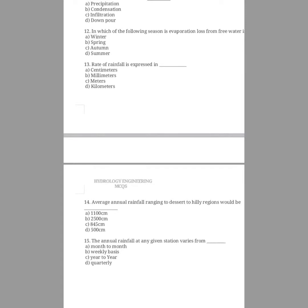Question number fourteen: average annual rainfall ranging from desert to hilly region would be what? The options are 1100 centimeters, 2500 centimeters, 845 centimeters, 500 centimeters. The answer is option A, 1100 centimeters, because rainfall varies widely from one part of the world to another. Ranging from desert regions to hilly regions, the average annual rainfall may be over 1100 centimeters. In some regions, seasonal variation is slight and monthly rainfalls are relatively uniform.